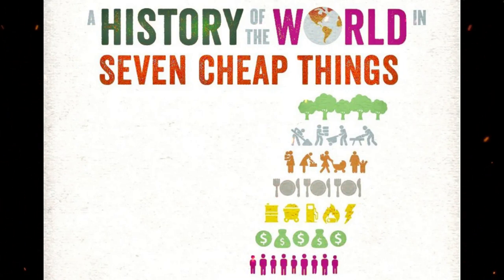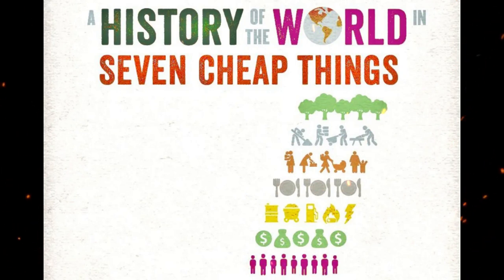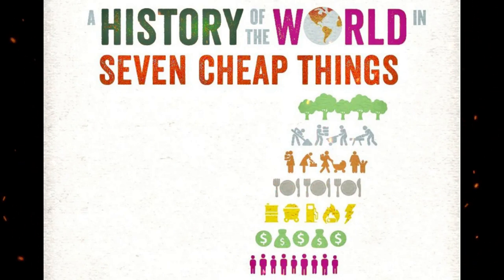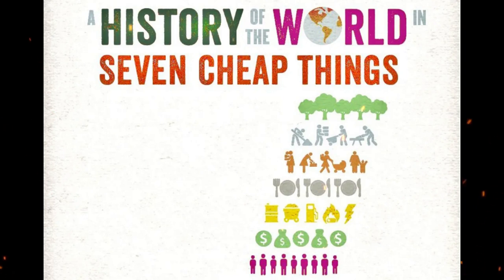From the colonial era to the present, cheap care has primarily taken the form of the care work performed domestically by women. The capitalist system, the authors argue, insists on dividing work from care in order to justify its failure to remunerate the latter.